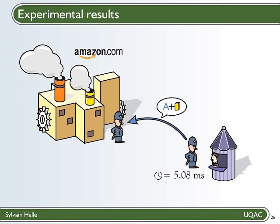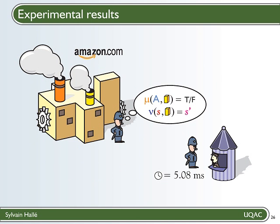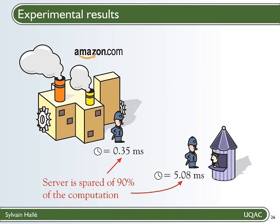Then the message and the proof are relayed to the server-side monitor, which computes gamma and nu to derive the next state of the protocol. And on average, for the same message, it takes 0.35 milliseconds to do it. This is more than 10 times faster in this example. So it means that, in this context, the server is spared of as much as 90% of processing time while retaining the same guarantees over the compliance to the contract than if it had monitored the whole thing by itself.